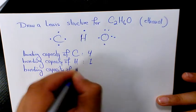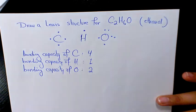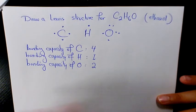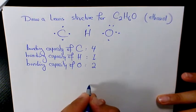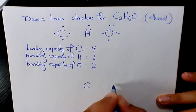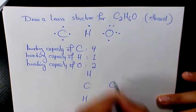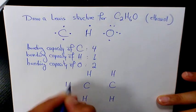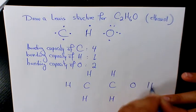For ethanol, we need to arrange the atoms in this way: C, C, H, H, H, H, H, H, O, and H.